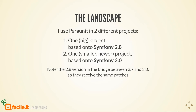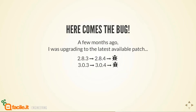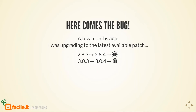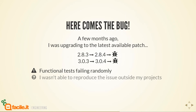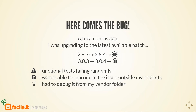Why is this relevant? A few months ago I tried to upgrade to the latest patch, which was the fourth. I started having strange behaviors on both projects — functional tests failing at random — and I didn't know the cause. But I was sure that something in the patch was triggering a bug, probably something I did wrong in my project. I wasn't able to reproduce the issue outside my projects, so I decided the only way was to debug it from my vendor folder inside my projects. That sounds hard but in reality it's really easy to do.